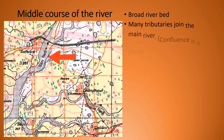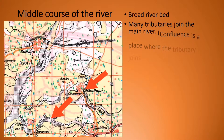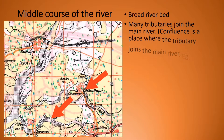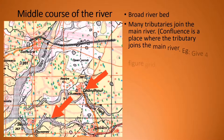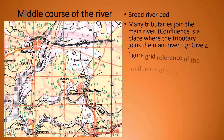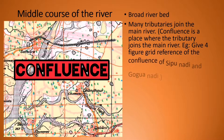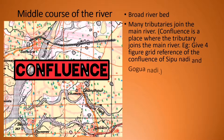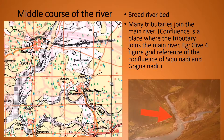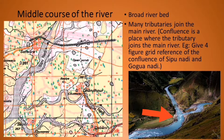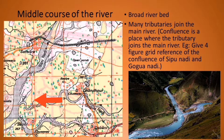You can also see many tributaries joining the main river. Can you see Goguanadi joining Sipunadi here? There is another important word you need to know: confluence. Confluence is a place where the tributary joins the main river. This word confluence may be asked like: give the four figure grid reference of the confluence of Sipunadi and Goguanadi. So you find the grid where Sipunadi and Goguanadi are joining, and write that grid's four figure as the answer.